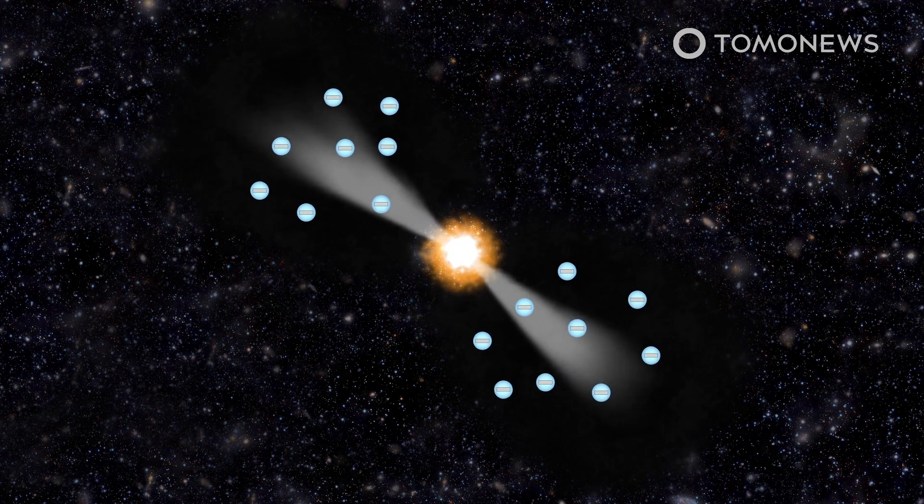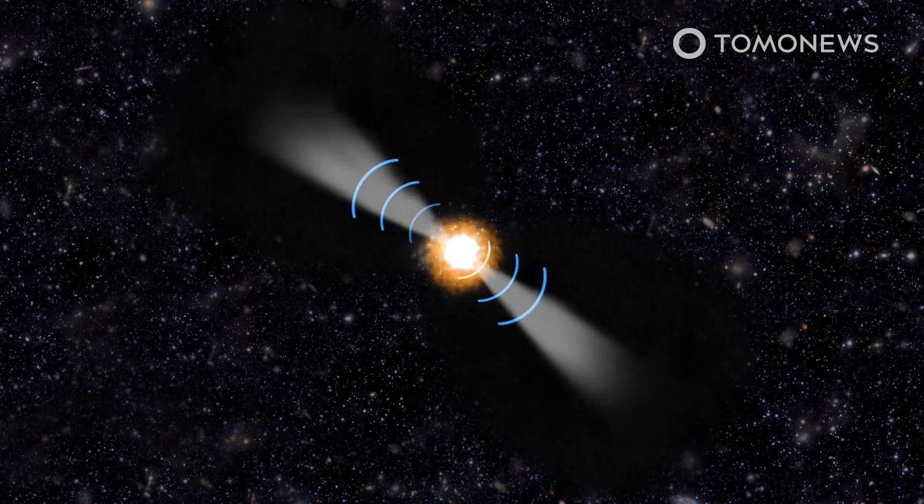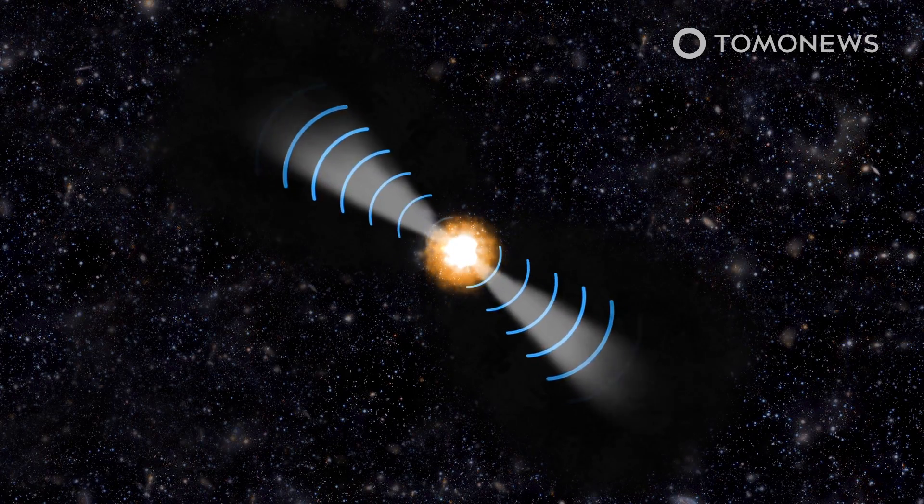The black hole created jets that accelerated electrons to nearly the speed of light, which resulted in radio waves that filled the cavity left in the eruption's wake.